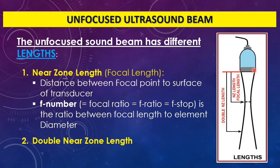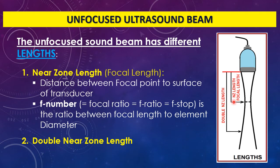Another length to discuss is the double near zone length. If the near zone length is, say, 10 centimeters, the double near zone length is 20 centimeters. The beam continues beyond this point, but at the depth of double the near zone length, a specific event occurs. The near zone length is related to the F-number, which is the ratio between the near zone length (or focal length) compared to the diameter of the ultrasound beam.